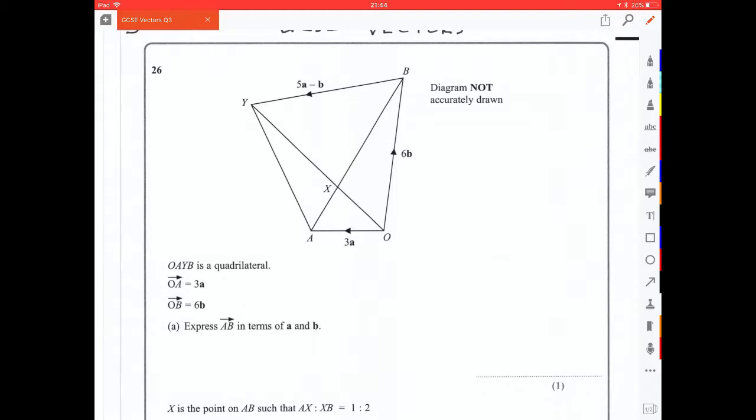GCSE vectors question 3. OAYB is a quadrilateral. OA is 3 little a and OB is 6 little b. Express AB in terms of little a and little b. So let's get a route from A to B.